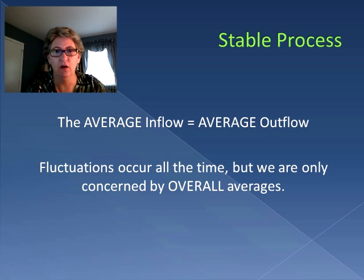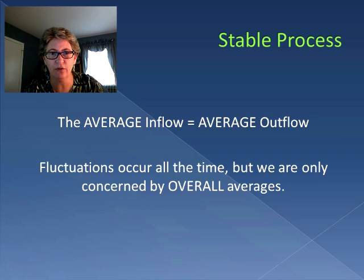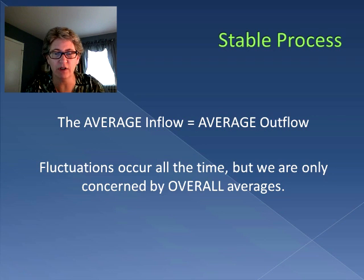When you flip a coin, on average you get 50 percent heads and 50 percent tails, but on an individual flip or three in a row, you won't get that. We can't study a process on individual transactions, we can only study it using averages. Fluctuations happen all the time, but we're looking at overall averages.